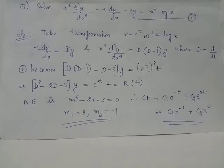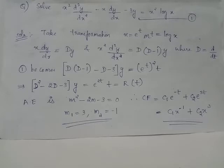Solve the differential equation x squared d²y/dx² minus x dy/dx minus 3y equals x squared log x. Let us call this differential equation as equation 1. Notice that this differential equation possesses variable coefficients: coefficient of d²y/dx² equals x squared, coefficient of dy/dx equals x. This is of Cauchy-Euler type.